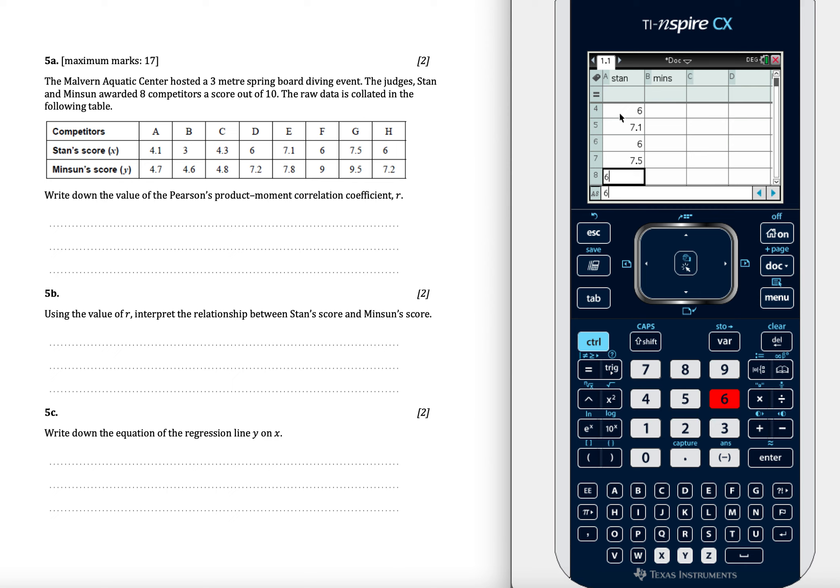So let's just double check. 1, 2, 3, 4, 8 competitors. And then 4.7 enter, 4.6 enter, 4.8, 7.2 enter, 9 enter, 9.5, and 7.2.